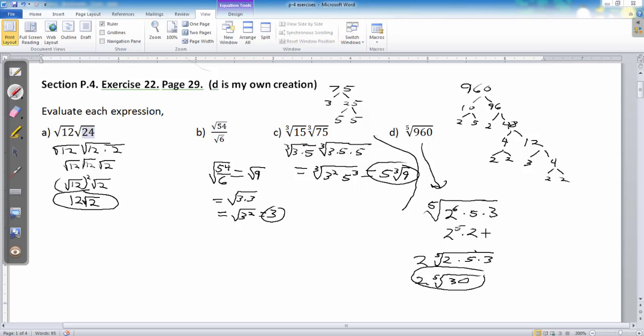Notice an upshot here is that basically what we're doing is we're taking our index number here and bringing things out in this way. We take our index. We divide it into the exponent of each factor. 5 into 6 goes in one time. You know, 6 divided by 5. 5 goes in one time.